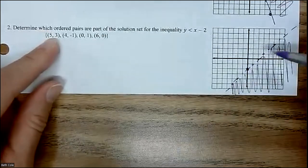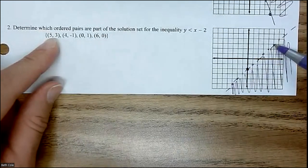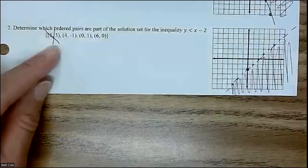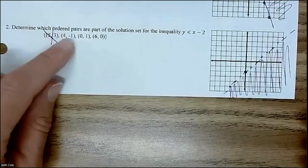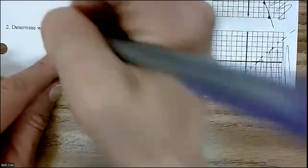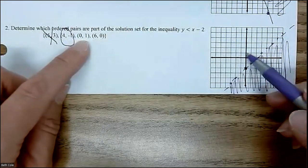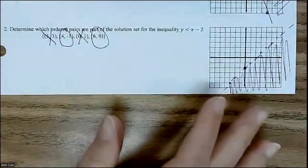Let's go through and check these. 5, 3, it's right here. It's on the line. So no, because it's dotted. How about 4, negative 1? Yes, that one would be good. How about 0, 1? No. And 6, 0.